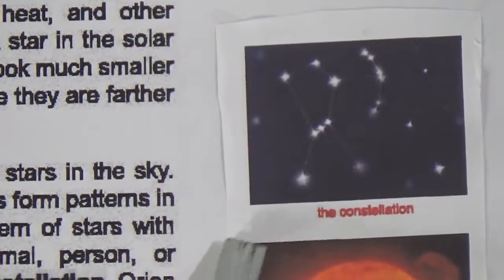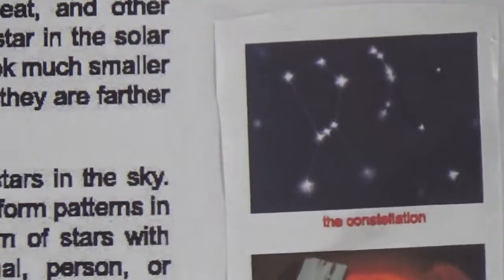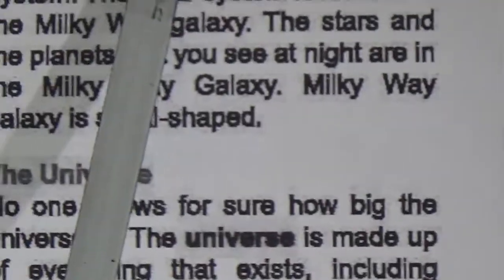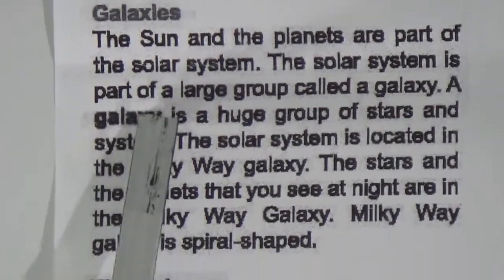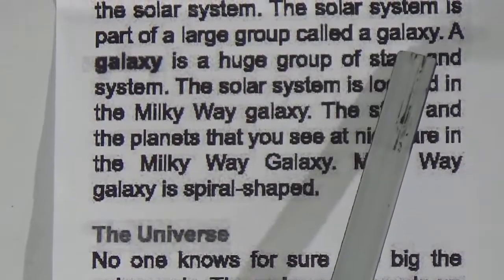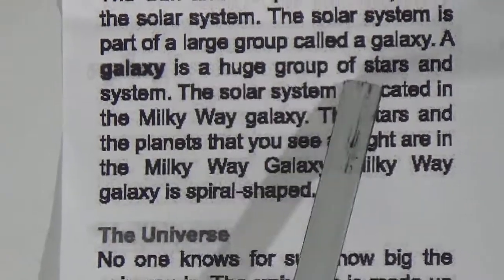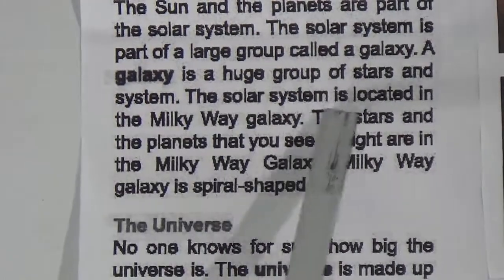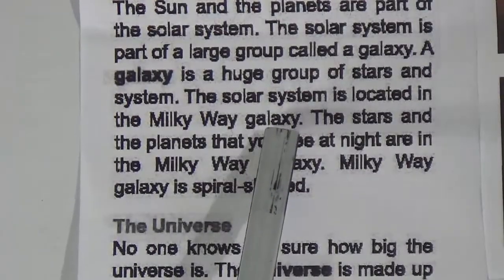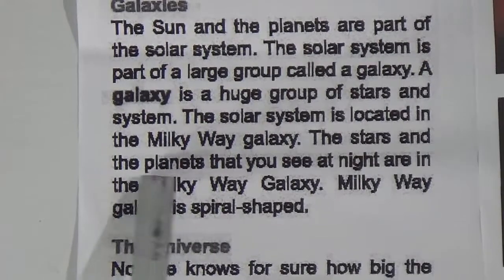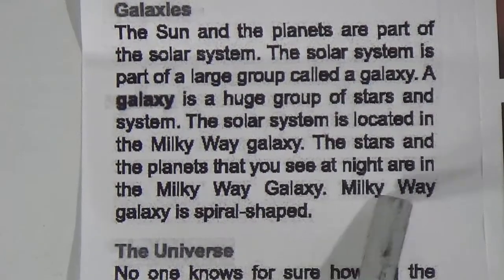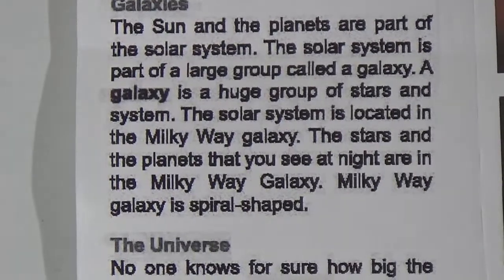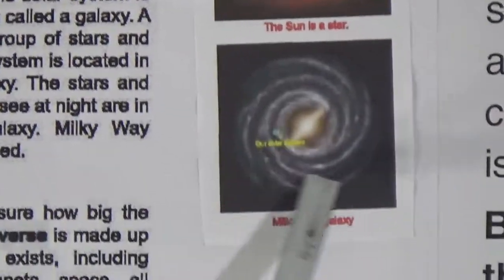You can see this picture — this is the constellation called Orion. Now, galaxy: the sun and the planets are part of the solar system. The solar system is part of a large group called a galaxy. A galaxy is a huge group of stars and systems. The solar system is located in the Milky Way galaxy. The stars and planets that you see at night are in the Milky Way galaxy. The Milky Way galaxy is spiral in shape. You can see this picture — this is the Milky Way galaxy, and this shape is called spiral.